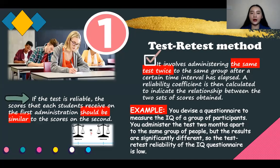Now let's talk about the test and retest method. The test and retest method is considered as the most straightforward and most appropriate method. So it involves administering the same test twice to the same group after a certain time interval has elapsed. A reliability coefficient is then calculated to indicate the relationship between the two sets of scores obtained.